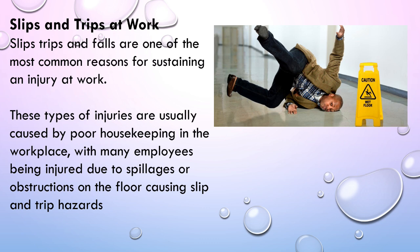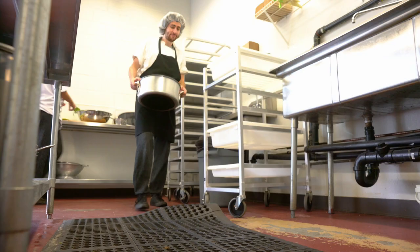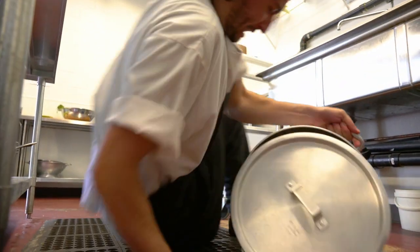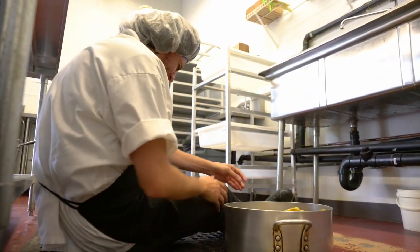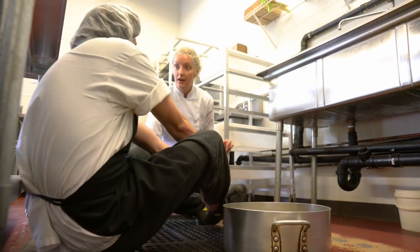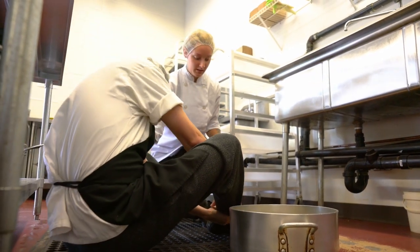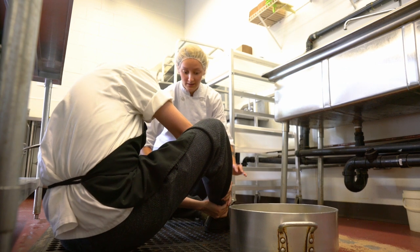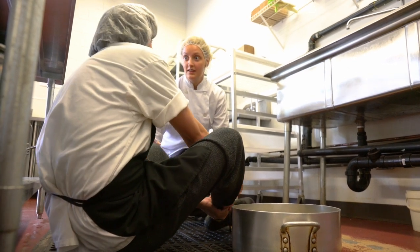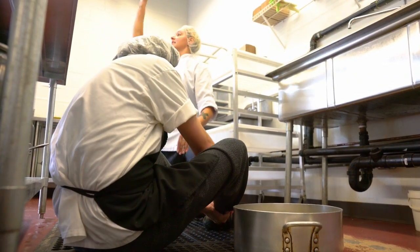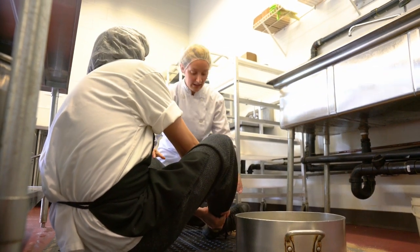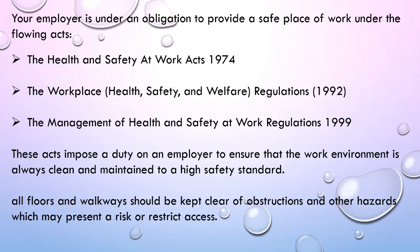Slips, trips and falls are one of the most common reasons for sustaining an injury at work. These types of injuries are usually caused by poor housekeeping in the workplace, with many employees being injured due to spillages or obstructions on the floor causing slip and trip hazards.